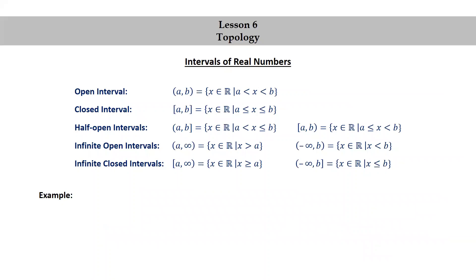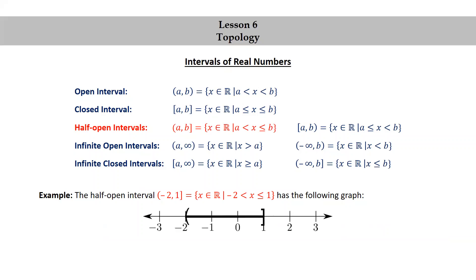Let's look at an example. The half-open interval (−2, 1] — that's the set of real numbers x such that −2 < x ≤ 1 — has the following graph. Notice how we use an open parenthesis at −2 and a closed bracket at 1, to indicate that −2 is not included in the interval and 1 is.